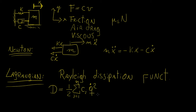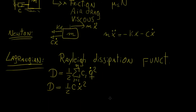In the case of this system, our dissipation function would be one half times the damping constant c times x-dot squared. This is going to have exactly the same effect as the damping force, but now it's expressed as a kinetic-energy-type equation rather than just a force. It's such a simple and useful concept — I honestly don't know why you don't see this more often in textbooks. But now you can do this kind of analysis in Lagrangian mechanics as well.